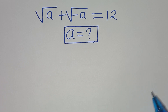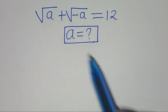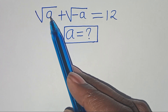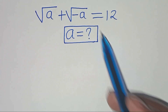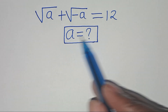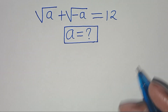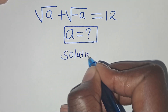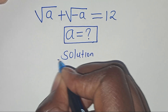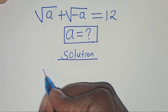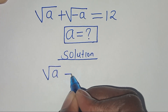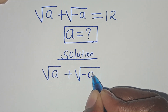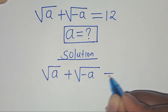Hello everyone, welcome. We'll solve this nice square root math problem: the square root of a plus the square root of minus a equals 12. What is the value of a? Let's present a solution. We have square root of a plus square root of minus a equals 12.